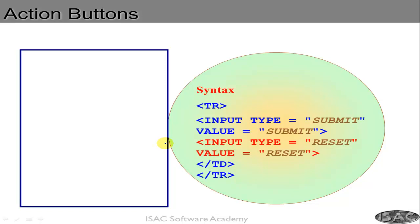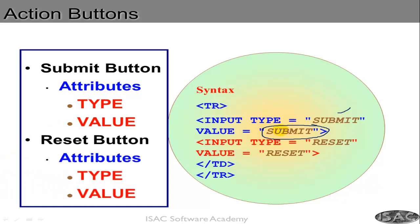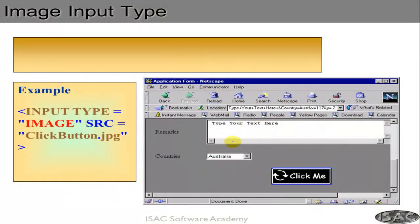Once you create input types, next you need a submit button: input type equals to submit, value equals to submit. When you click that button, an action is triggered. The value is the text visible on the button — you can change it to say 'Click Me' or anything you want to display. Reset button clears all data entered in the form so the user can re-enter. You can also do input type equals to image with a source like click-button.jpg, creating an image button that works like a submit.